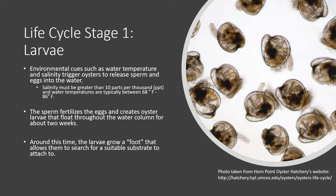Before spawning begins, however, specific water conditions must be met. For example, water temperatures must be between 68 and 86 degrees Fahrenheit, and salinity must be greater than 10 parts per thousand. When the sperm fertilizes the egg, it begins the first stage of life for the eastern oyster, the larval stage.